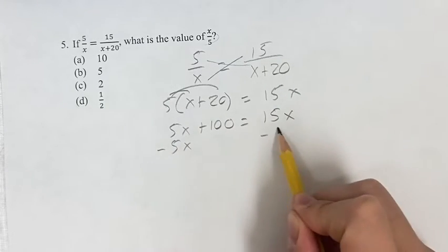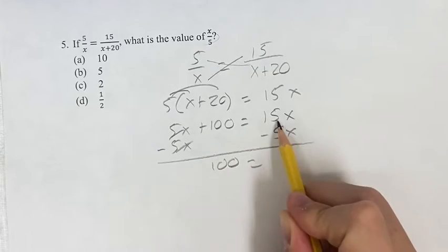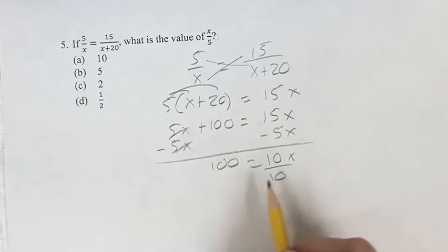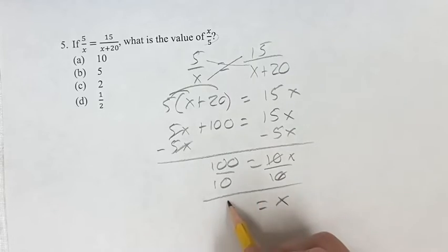Subtracting 5x on both sides gives us 100 is equal to 15 minus 5 is 10x. Now we want to get x alone, so we divide both sides by 10. Now x is equal to 100 divided by 10, which is 10.